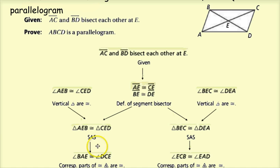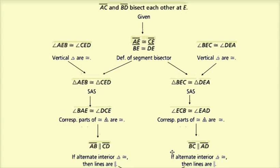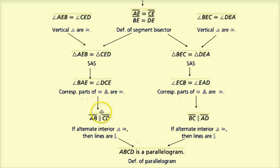Since the triangles are congruent, their corresponding parts are congruent by CPCTC. So angle BAE is congruent to angle DCE, and angle ECB is congruent to angle EAD. Those happen to be alternate interior angles, which means AB is parallel to CD, and BC is parallel to AD. Since both pairs of opposite sides are parallel, ABCD is a parallelogram by the definition of parallelogram.